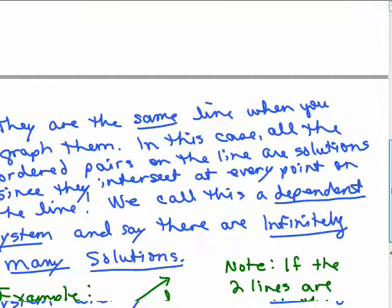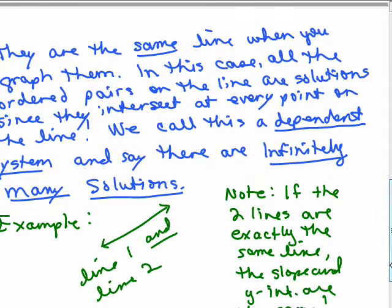The third possibility is that you graph it and they're actually the same line. So in this case, all the ordered pairs on the line are the same on both lines. So they intersect at every single point on the line. So this is called a dependent system because if you give me a value of x, then I could tell you what y goes along with it.